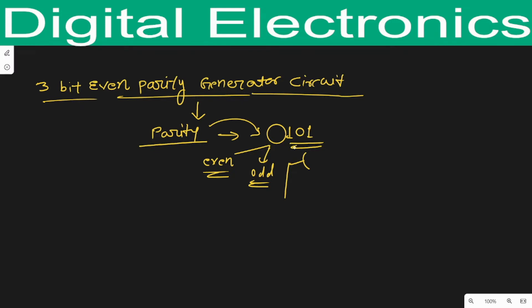In the case of even parity, if the number of ones in the message is even, then the parity bit will be zero. But in the second case, when the number of ones in the message is odd — for example, only one '1' is there, and one is an odd number — then in the case of even parity the parity value is one.